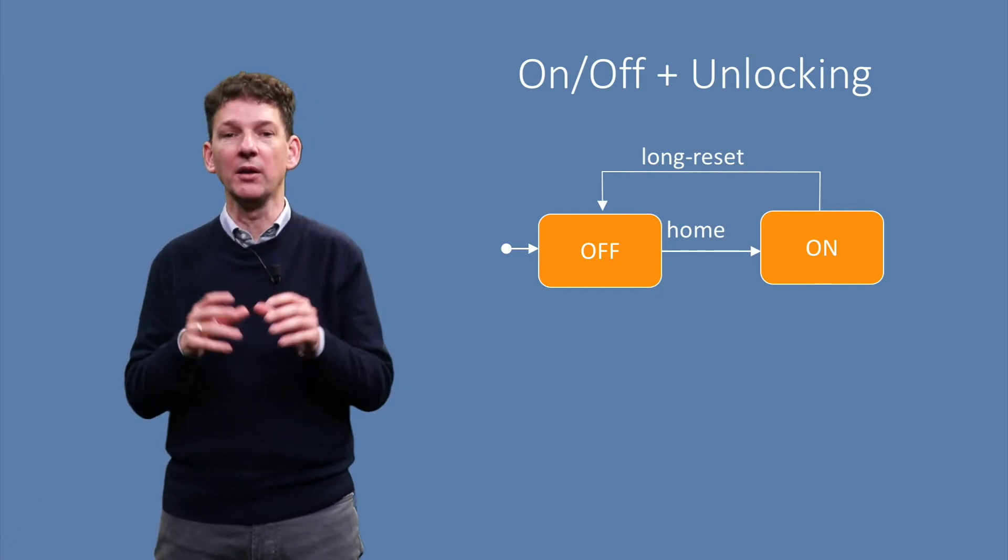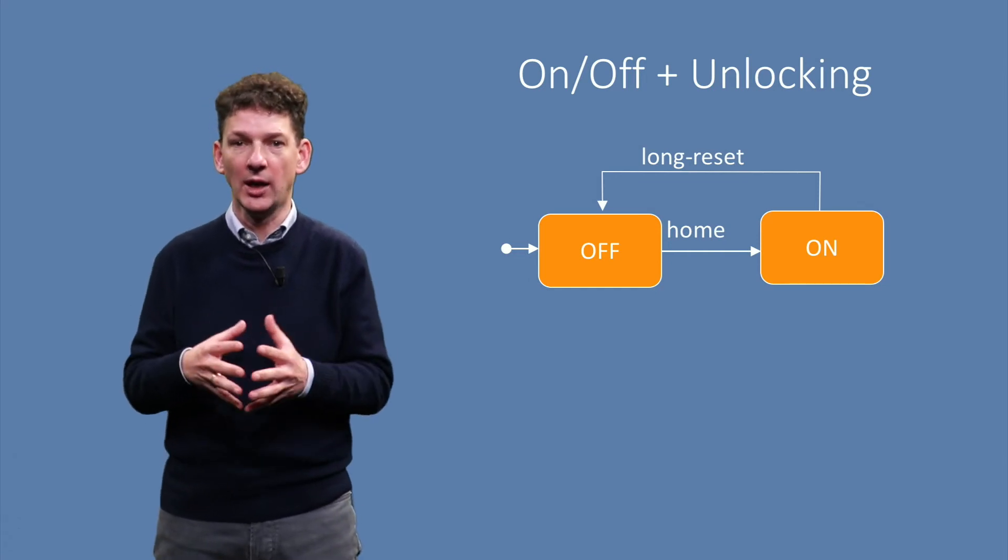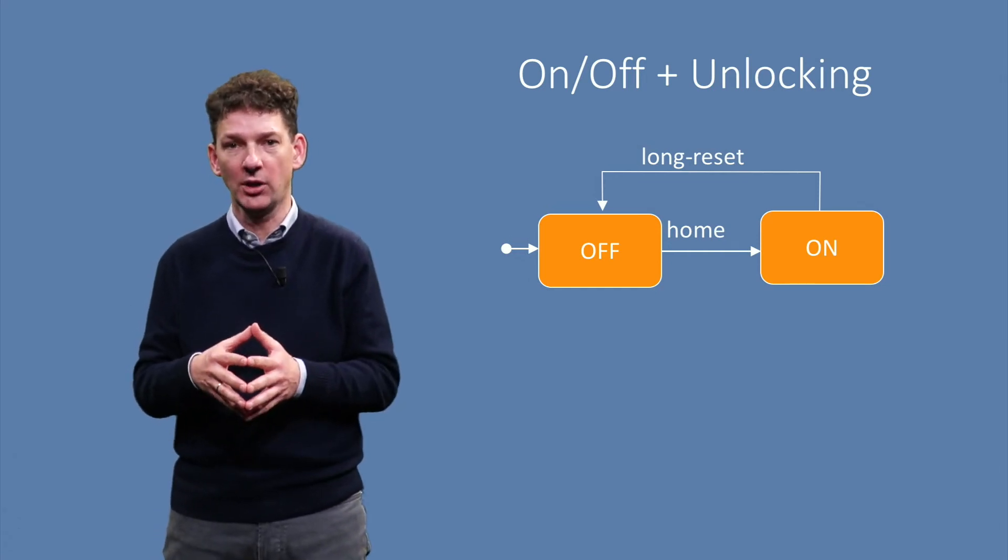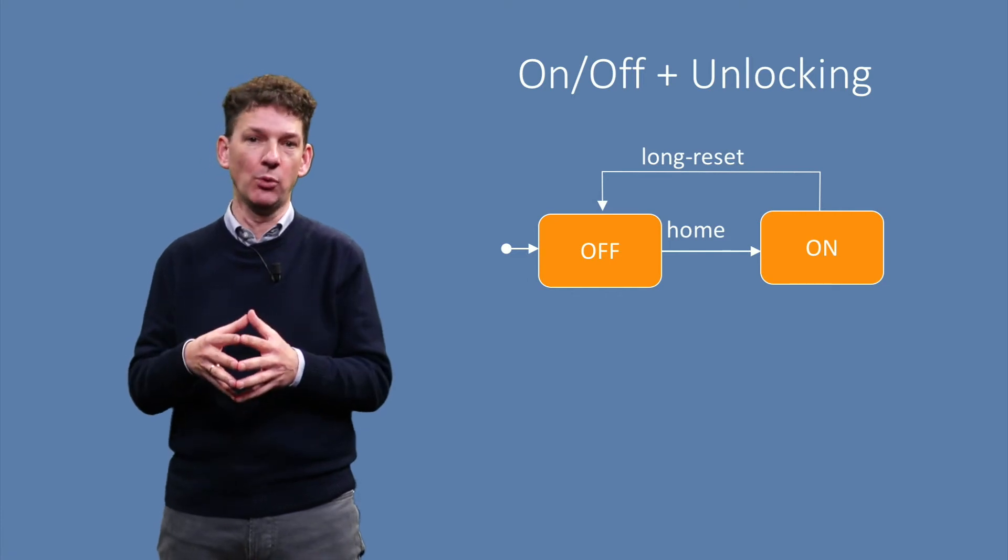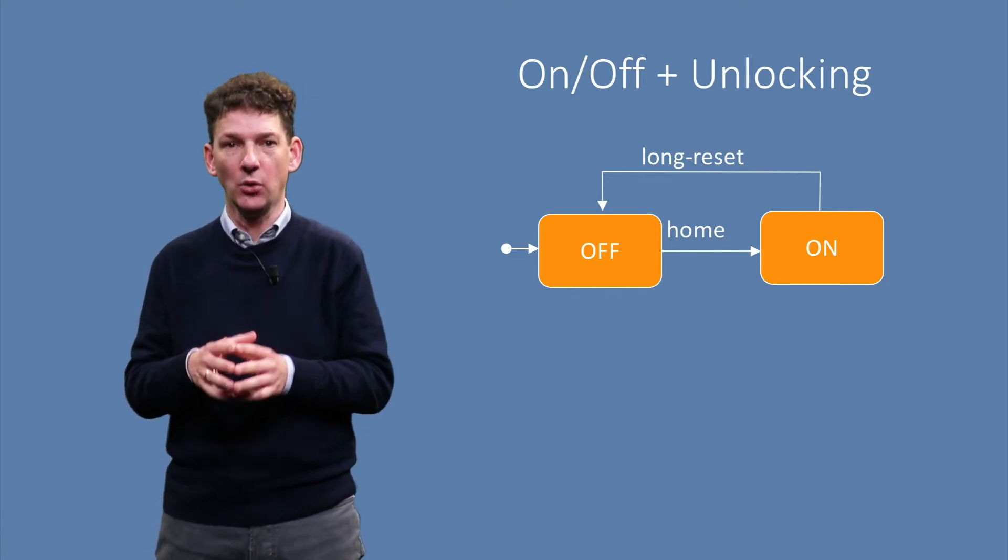Lastly, we can fully expand the ON super-state to arrive at the complex diagram we started with, in case we want to exhaustively test all possibilities.